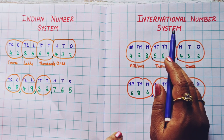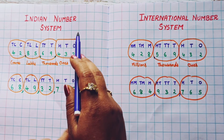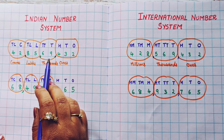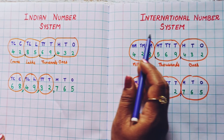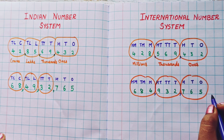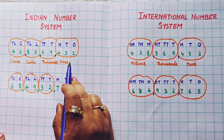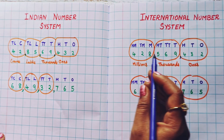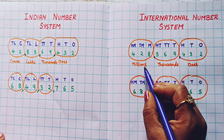I hope both the Indian number system and the international number system are clear to you. In the Indian number system, after the first three digits we give a comma, and thereafter after every two digits we give a comma. Whereas in the international number system, after every three digits we give a comma. In the Indian number system the groups are: ones group, thousands group, lakhs group, and crores group. In the international number system we have: ones group, thousands group, and millions group.